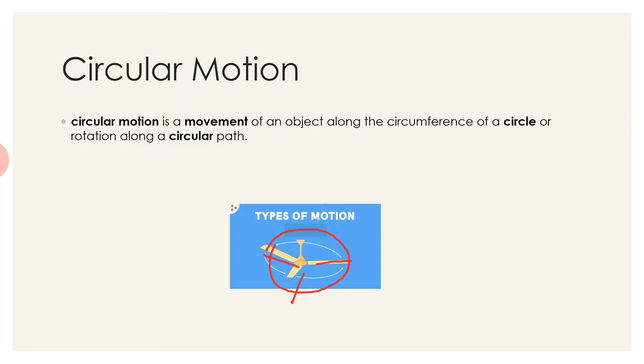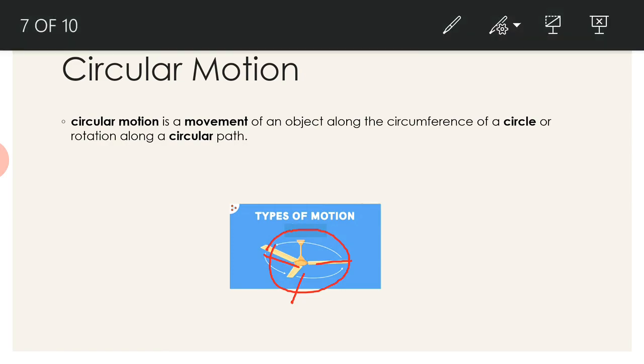The path taken by the wings of the fan is fixed and it always moves around a circumference. If I try drawing a circle out of this example, this is the center and the path taken by the wings is this. It is forming a circular path. This circular orbit is considered the path of the wings of the fans, and this motion is called circular motion.